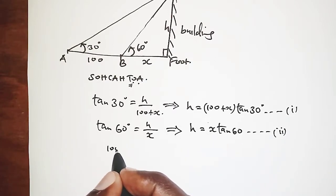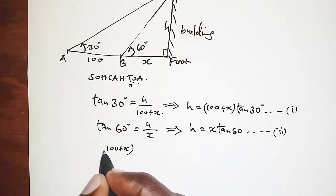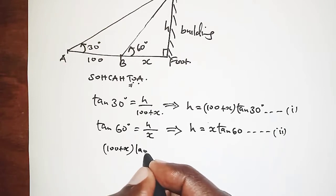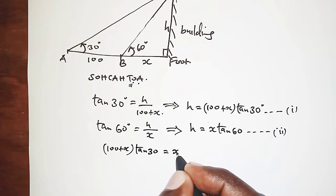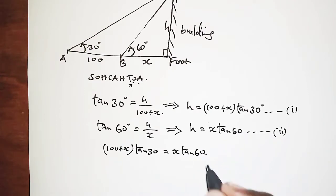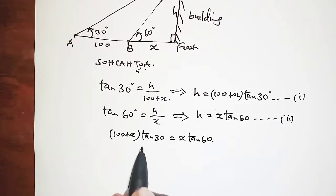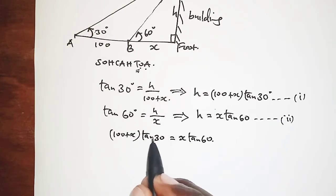So we say (100 + X) tan 30° equals X tan 60°. And that means when you open the brackets here, our aim is to make X the subject.